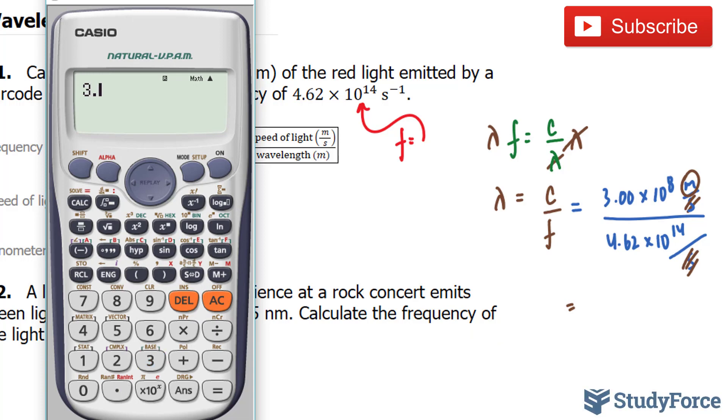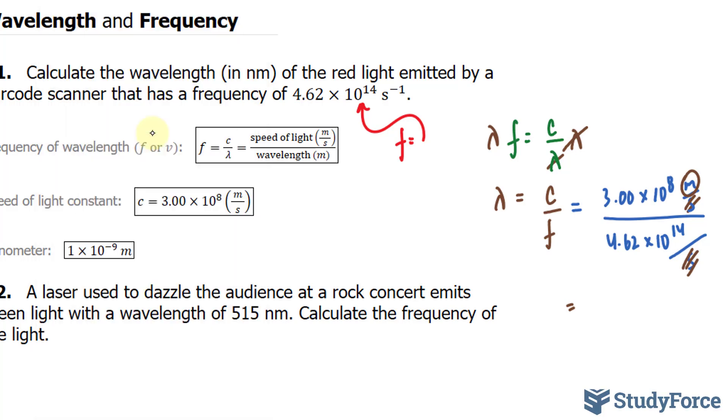Using our calculator, we have 3.00 times 10 to the power of 8 divided by 4.62 times 10 to the power of 14. This gives us a very small number of approximately 6.49 times 10 to the power of negative 7. And we want this to 3 significant figures, so I'll stop writing after this 9. I'll write down 6.49 times 10 to the power of negative 7 meters.